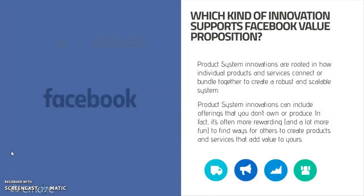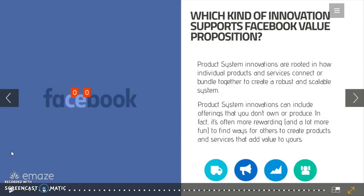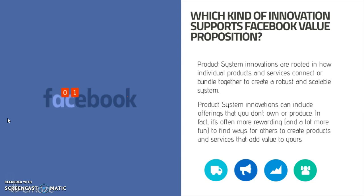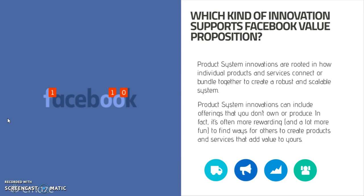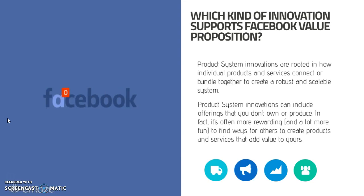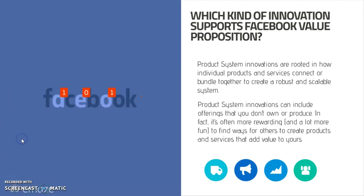So I identified that Facebook is a product system innovation. A product system innovation is rooted in how individual products and services connect or bundle together to create a robust and scalable system. Product system innovation can include offerings that you don't own or produce. In fact, it's often more rewarding and a lot more fun to find ways for others to create products and services that add value to yours. I think that Facebook has these characteristics.